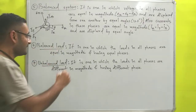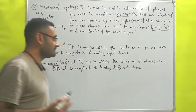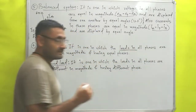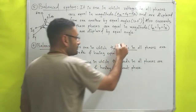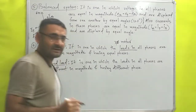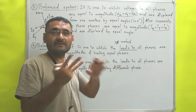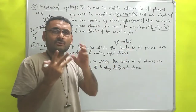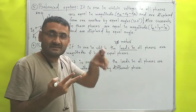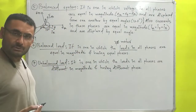Balanced load is one in which the loads in all phases are equal in magnitude and have equal phase angles. For example, in a three-phase motor, the three phases have equal load, meaning the resistance of each winding is the same, and all three phases are displaced at equal angles of 120 degrees. That type of load is known as a balanced load.